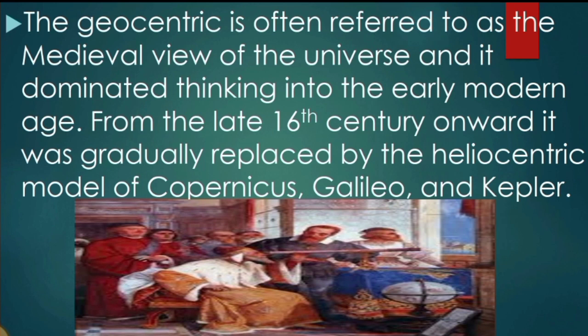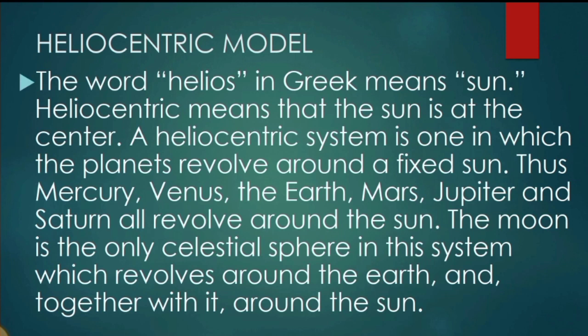Moving on, we have the heliocentric model. The word 'helios' in Greek means sun, so heliocentric means that the sun is at the center. A heliocentric system is one in which the planets revolve around a fixed sun — Mercury, Venus, Earth, Mars, Jupiter, and Saturn all revolve around the sun. The Moon is the only celestial body in the system that revolves around the Earth, and together with it, around the Sun.